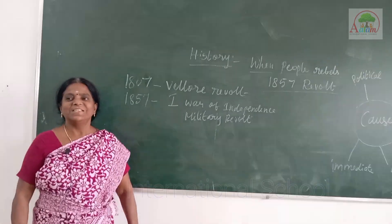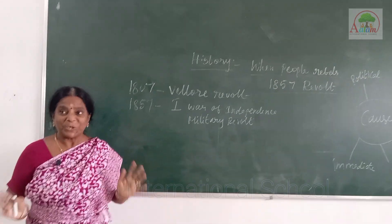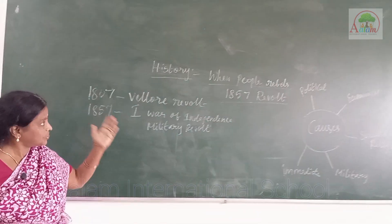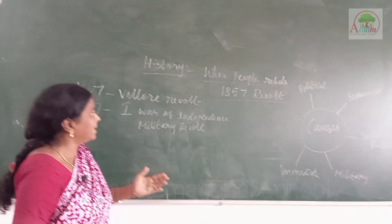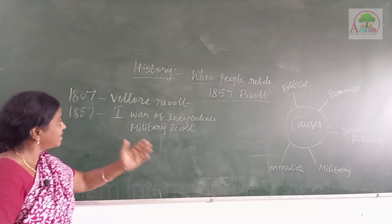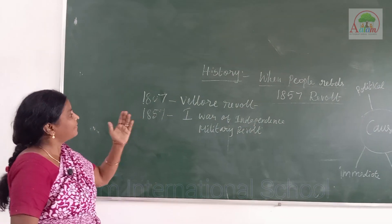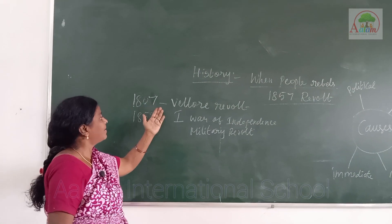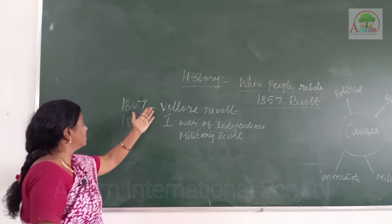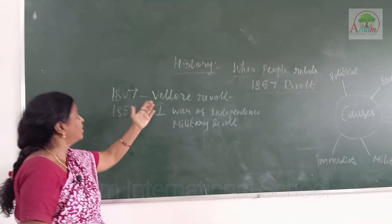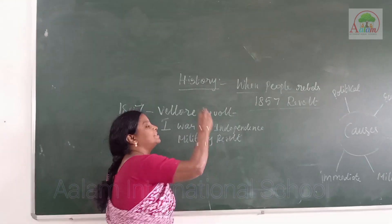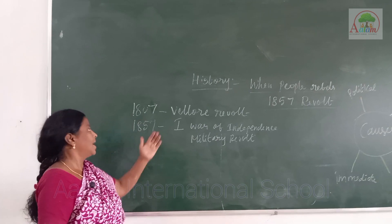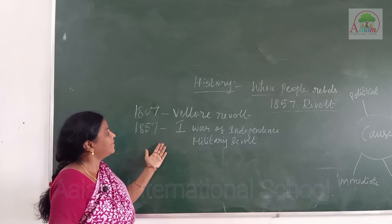Good morning children. Today we are going to see a very interesting chapter — that is history when people rebel, that is the 1857 revolt. Before the 1857 revolt, there was the 1807 Benlur revolt. This 1807 Benlur revolt is the first seed of the Indian War of Independence, after which came the 1857 revolt.